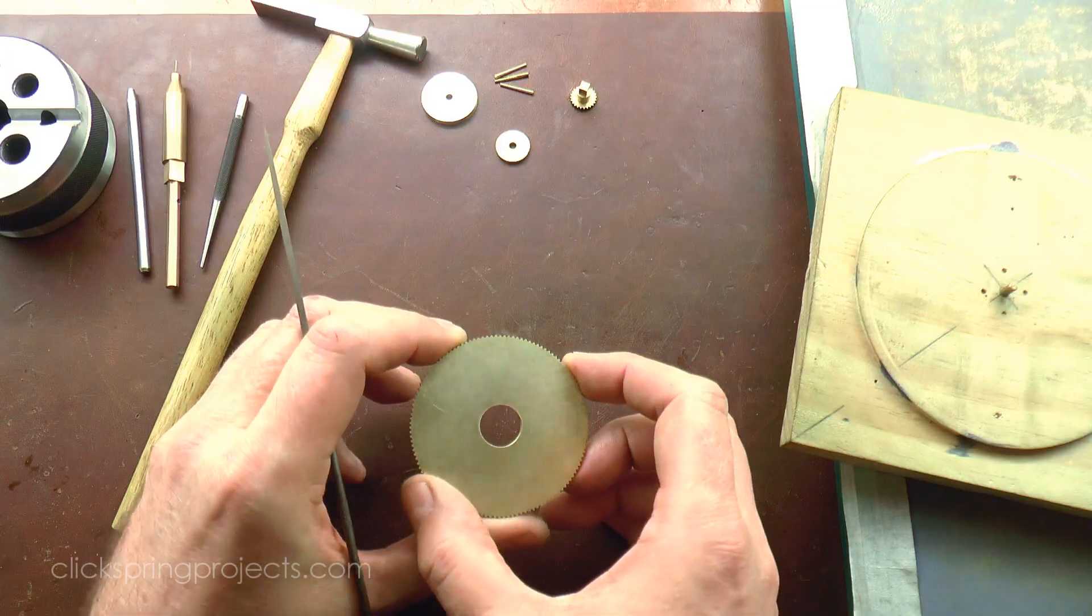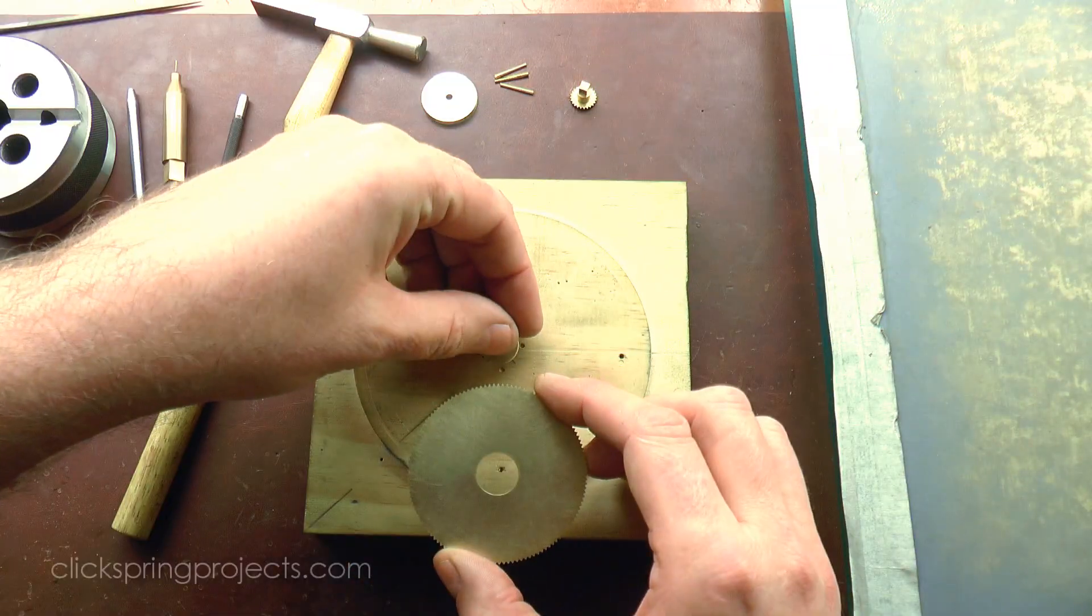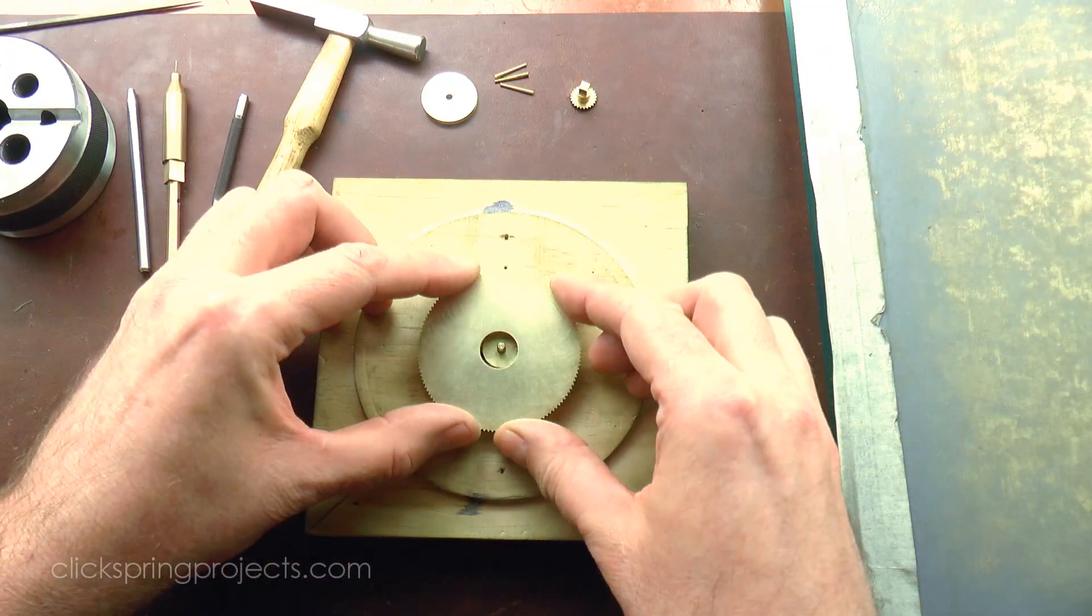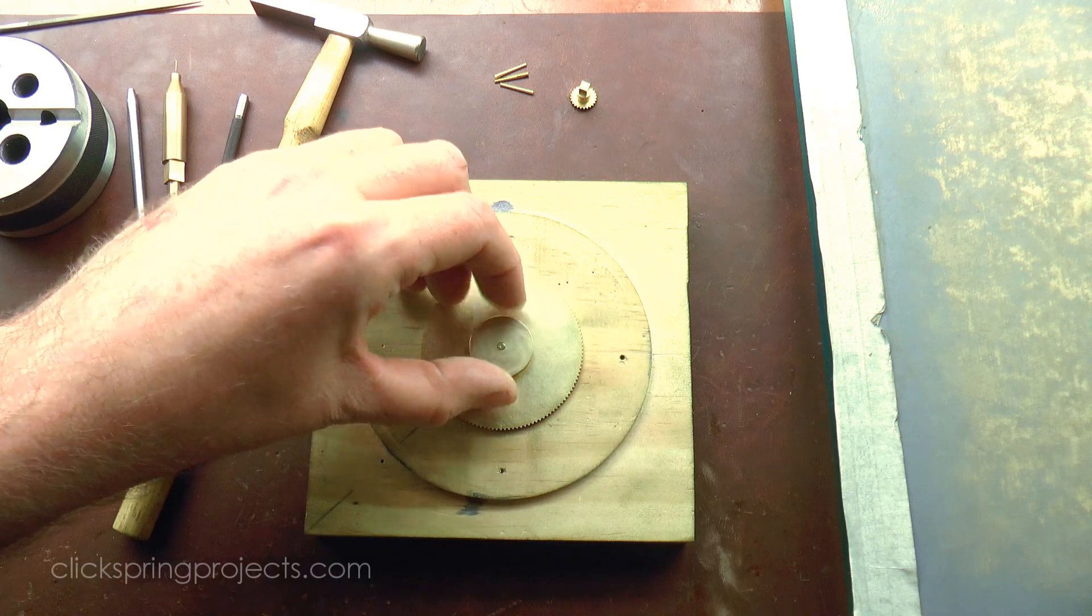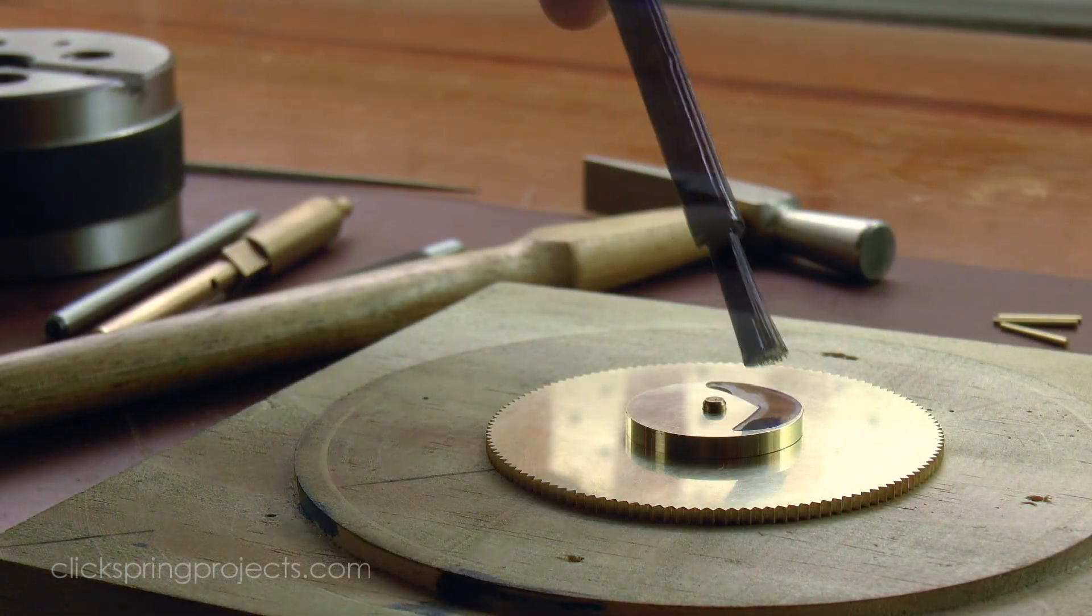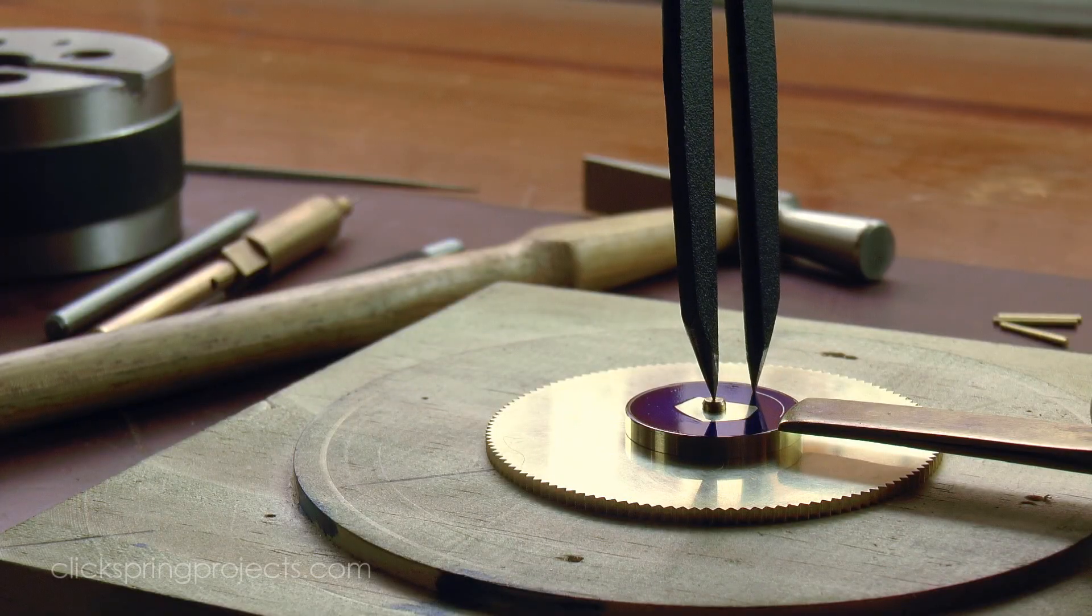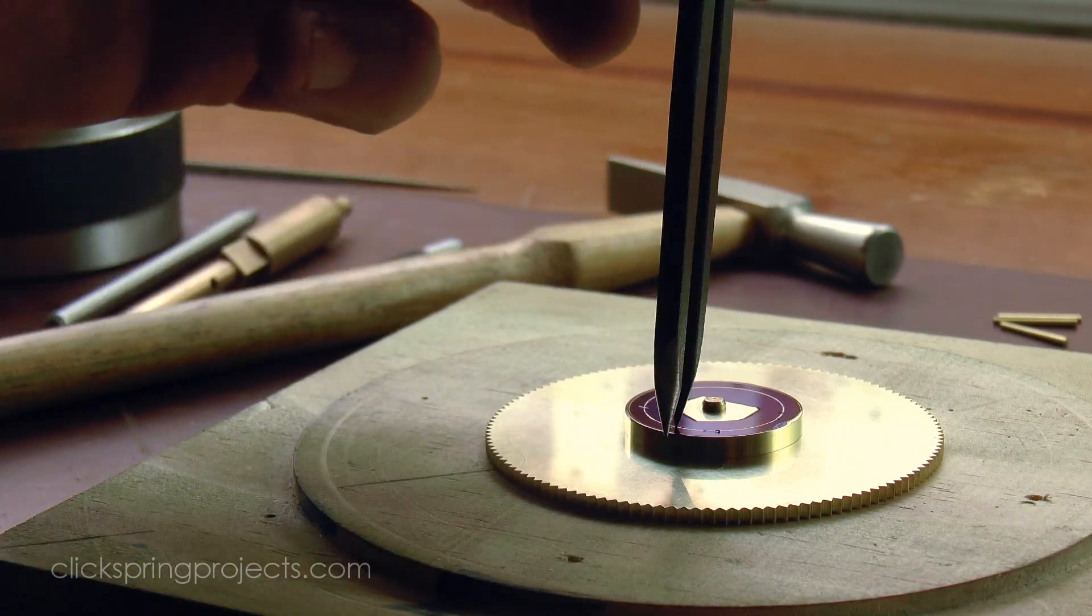Much like the M assembly, the D assembly must be capable of removal from the main plate. Additionally, the maker elected to run it flush against the underside of the E assembly platform, and in so doing created the requirement that the D assembly be fastened with a recessed retaining pin.